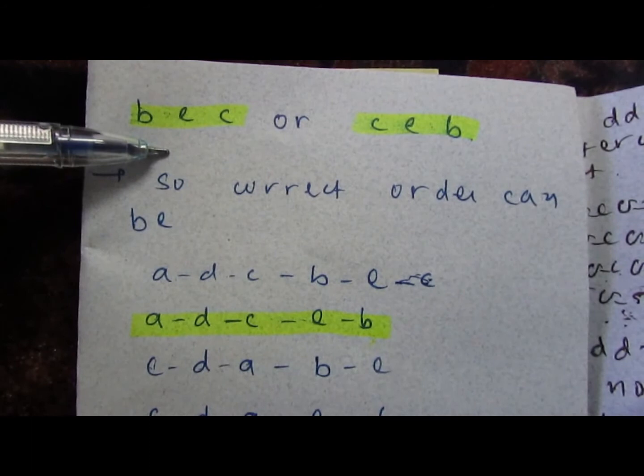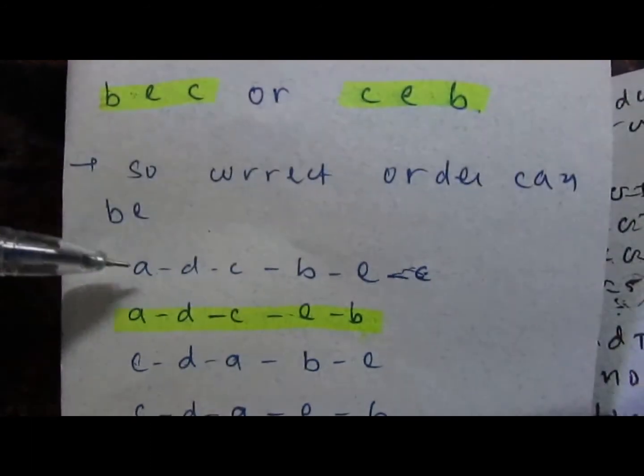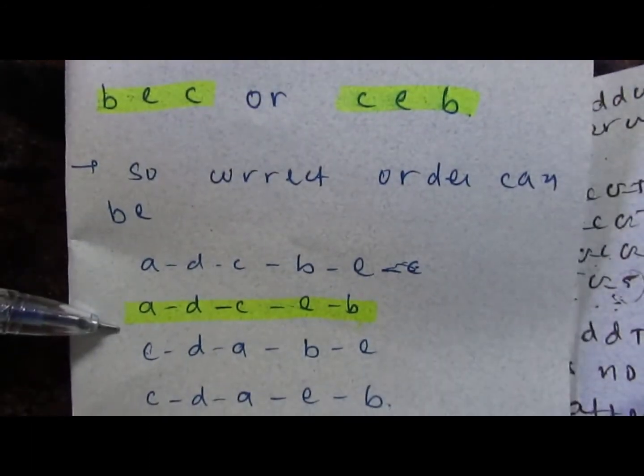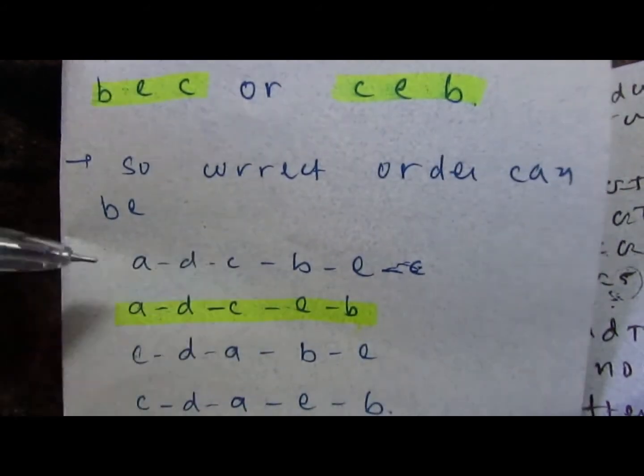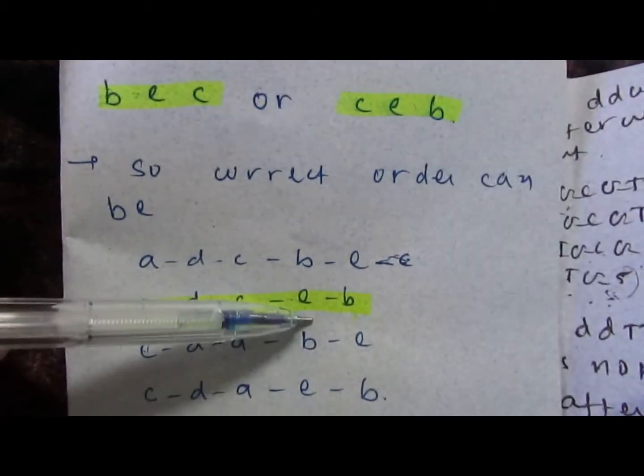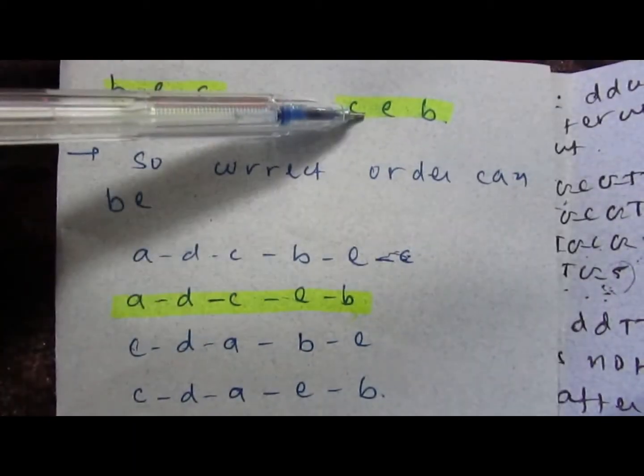So if we club a-d-c and b-e-c possibilities first, then there are two possibilities of correct gene order that can be either a-d-c-e-b or a-d-b-e-c.